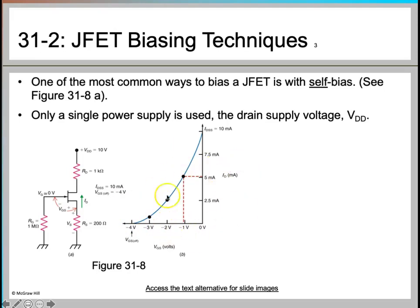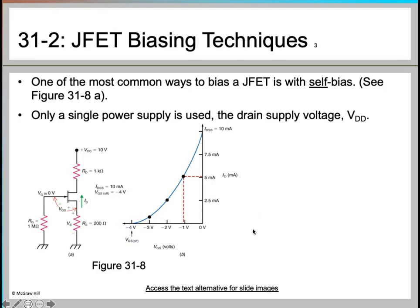IDSS is 10 milliamps, which is standard in most JFETs, and VGS-off is negative 4 volts. The transconductance curve shown on screen is drawn between IDSS — the drain-to-source current when VGS equals zero — at 10 milliamps, and VGS-off at negative 4 volts.